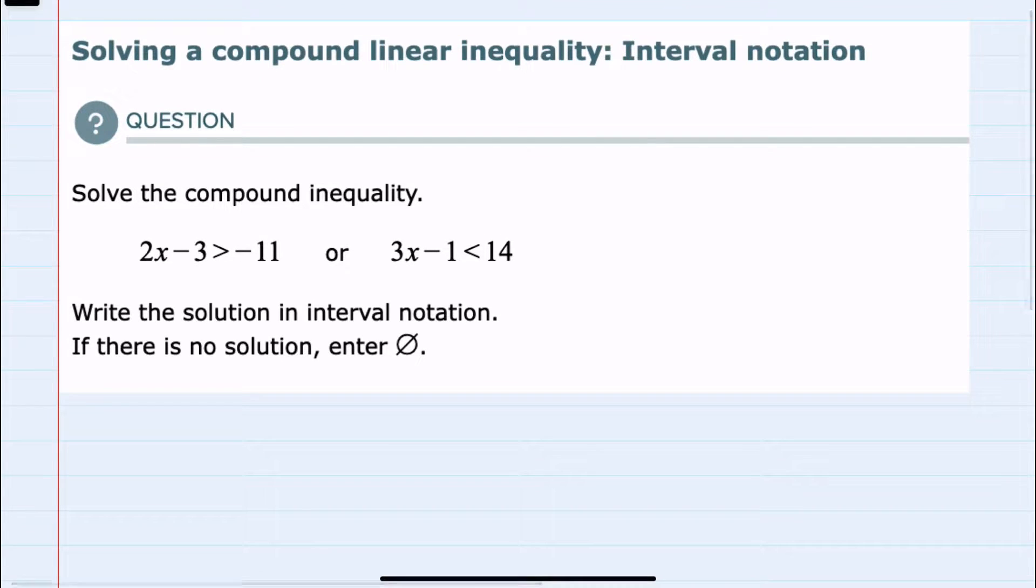In this video, I'll be helping you with the Alex problem type called Solving a Compound Linear Inequality Interval Notation. We're given two inequalities here: 2x minus 3 is greater than negative 11, and 3x minus 1 is less than 14.